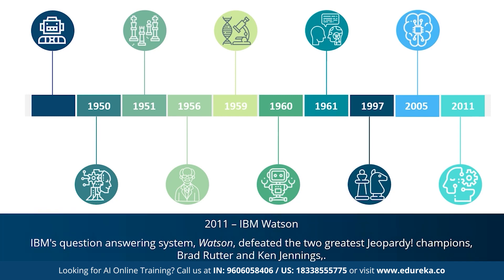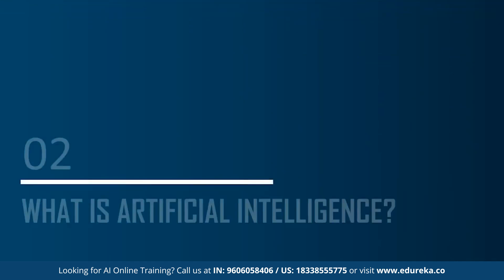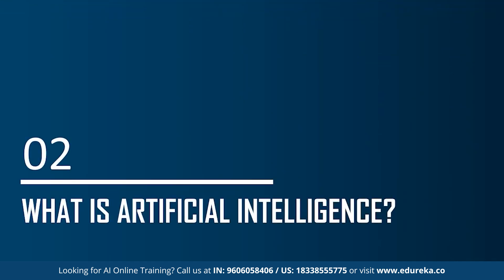So that was a brief history of AI. Since the emergence of artificial intelligence in the 1950s, we have seen an exponential growth in its potential. AI covers domains such as machine learning, deep learning, neural networks, natural language processing, knowledge base, expert systems, and so on. Now let's move on and understand what exactly artificial intelligence is.